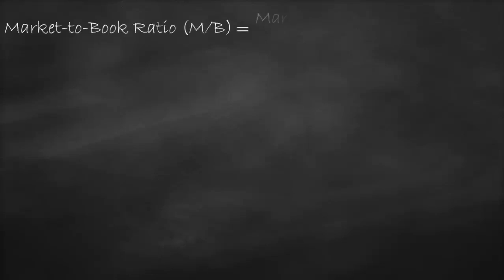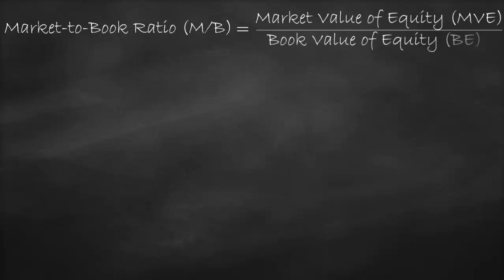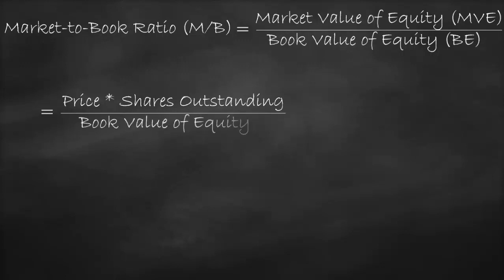The market-to-book ratio is calculated as the market value of equity divided by the book value of equity. The market value of equity is the share price times shares outstanding. So we can rewrite the market-to-book ratio as the share price times the shares outstanding divided by the book value of equity.